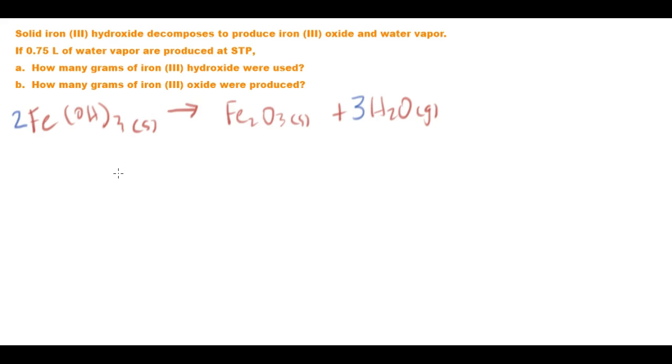How many grams of iron three hydroxide were used? So we are given 0.75 litres of water vapour. We know now using Avogadro's law we can find out the number of moles of water vapour because we know that's V over 22.71.